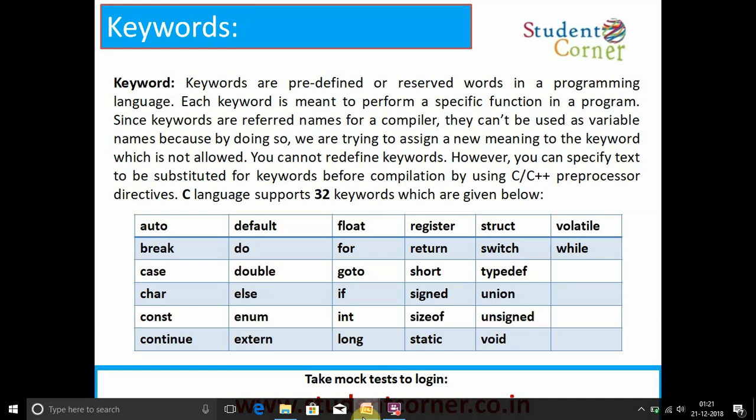However, you can specify text to be substituted for keywords before compilation using the C/C++ preprocessor directive. C language supports 32 keywords: auto, break, case, const, continue, default, do, double, else, enum, extern, float, for, goto, if, int, long, register, return, short, signed, sizeof, static, struct, switch, typedef, union, unsigned, void, volatile, and while. These are the 32 keywords available in C.